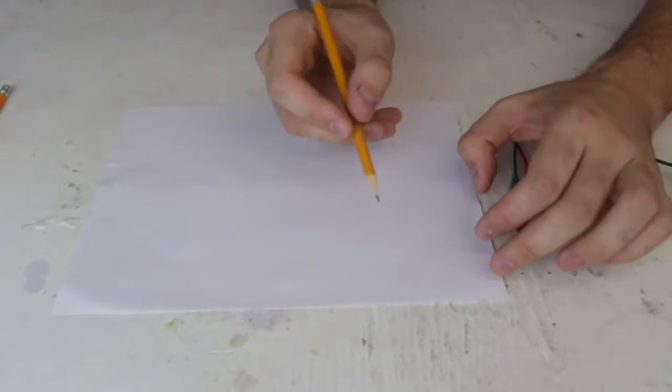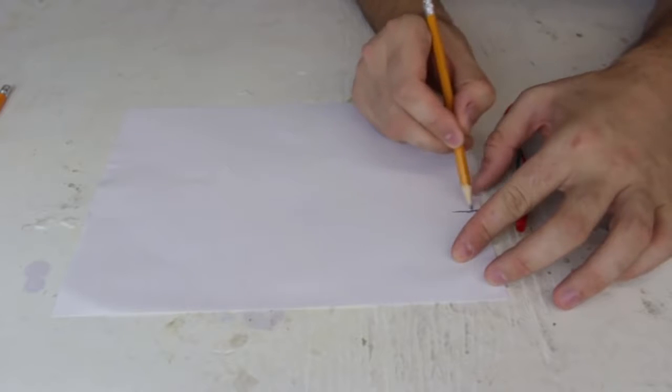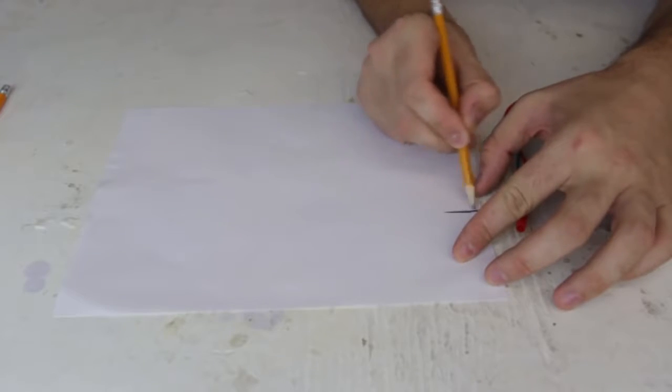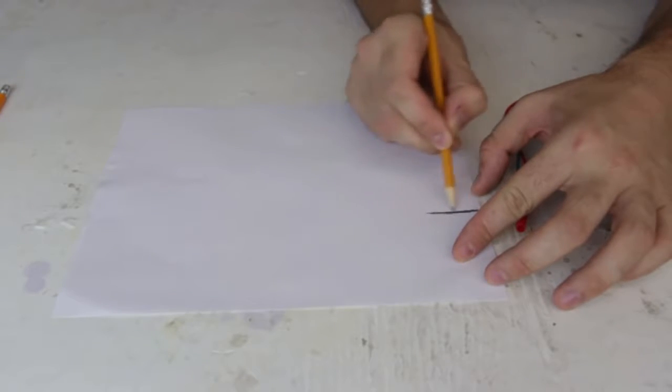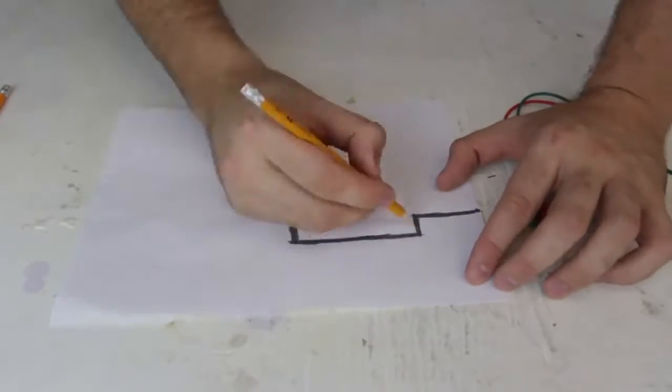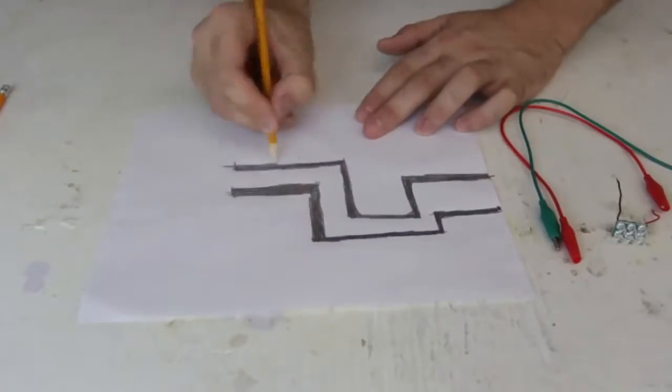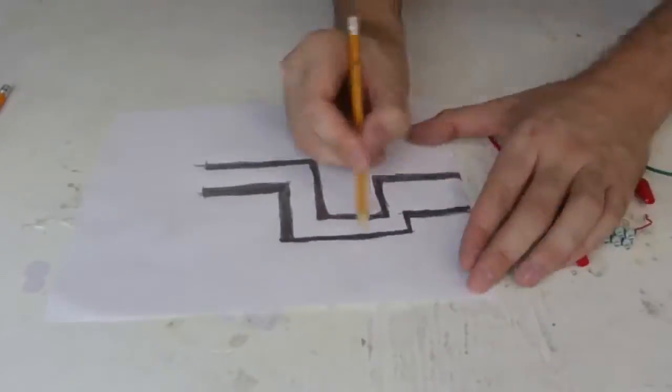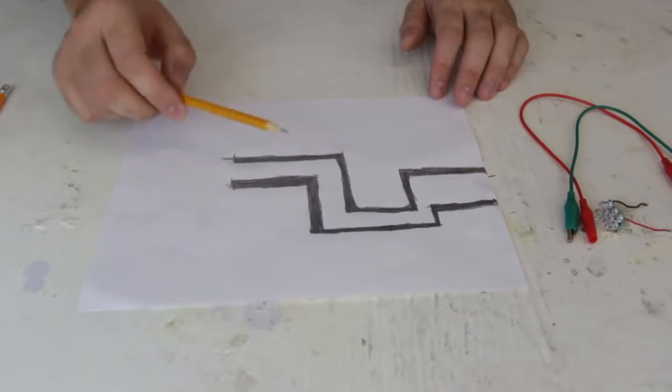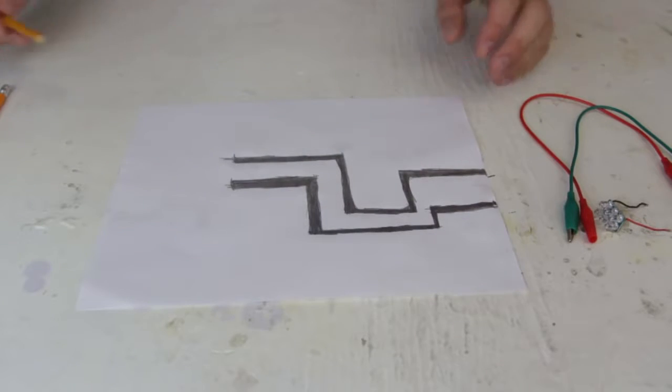First we're gonna grab a graphite pencil and we're gonna make a thick line of graphite, just like that. We're gonna make a circuit, pretty much. So we got ourselves a little circuit like that with a graphite pencil.